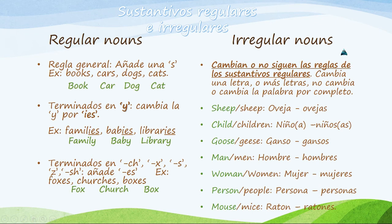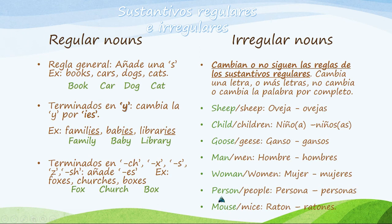Irregular nouns — sustantivos irregulares — are called so because they are not common or frequent like regular nouns; they do not follow the regular rules. They change one or more letters, don't change at all, or change the word completely. For example: sheep → sheep; child → children; goose → geese; man → men; woman → women; person → people; mouse → mice.